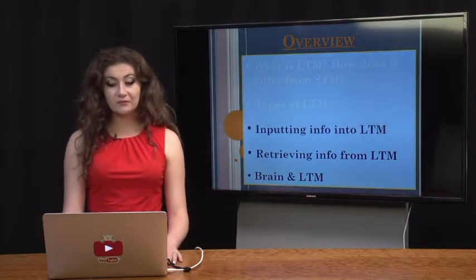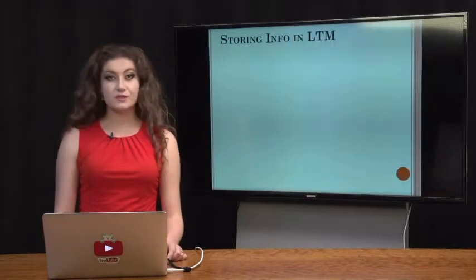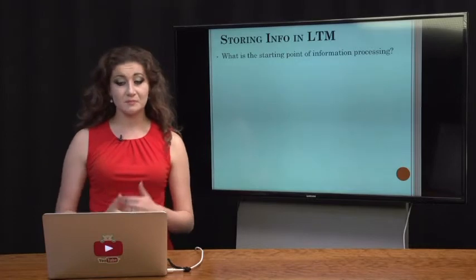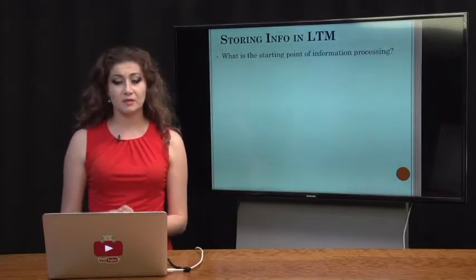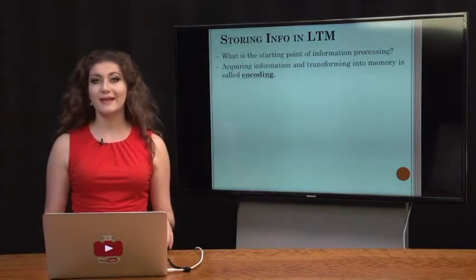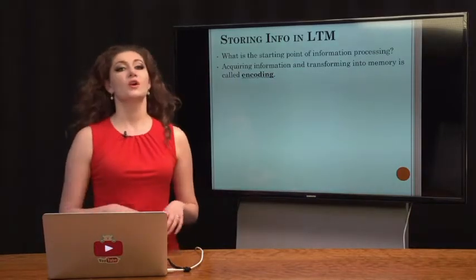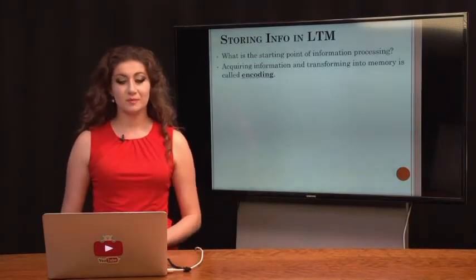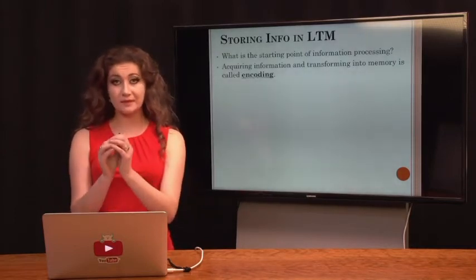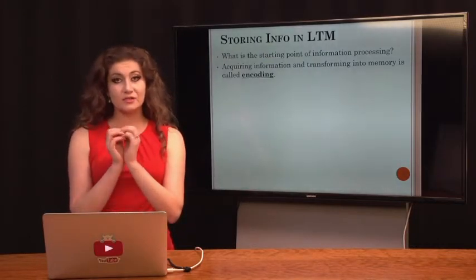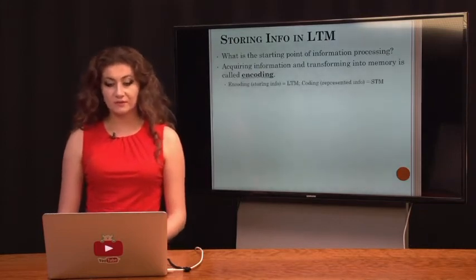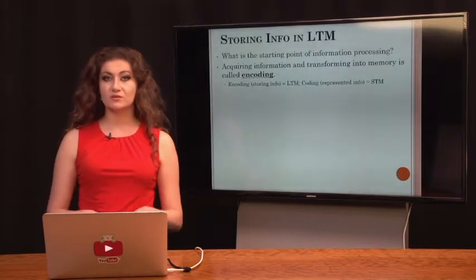Now we'll talk about actually inputting information into long-term memory from short-term memory. Acquiring information and transforming it into memory is called encoding. Taking information from sensory memory to short-term or working memory is called coding, which can be done auditorily, visually, and semantically. Once information has successfully made it into short-term or working memory, it must be encoded into long-term memory. So encoding is storing information in long-term memory, and coding is storing information in short-term memory from sensory memory.